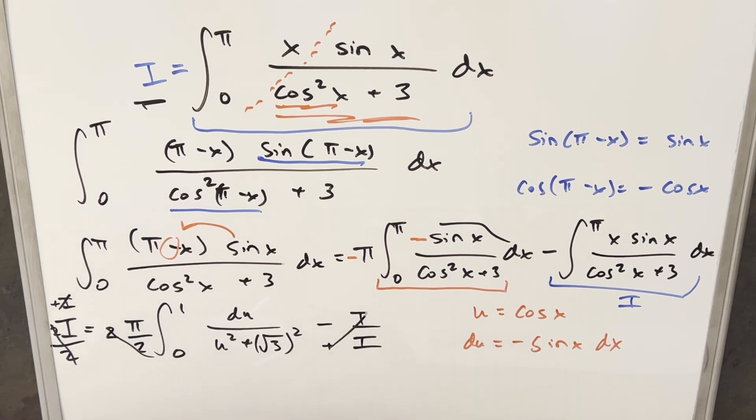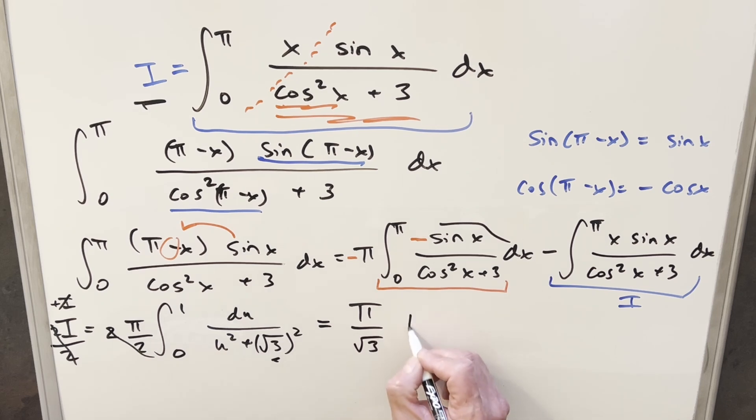And now I think we're ready to integrate. So for this here, we're just going to have our pi in front. This is going to be our arctan formula. So we'll have pi. And for the arctan formula, we're just going to have this value in the denominator. So this is going to be pi over square root of 3. And then this is going to become arctan of u over square root of 3. And this just needs to be evaluated from 0 to 1.